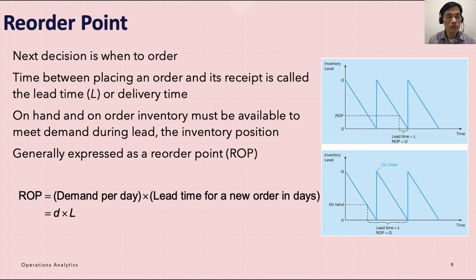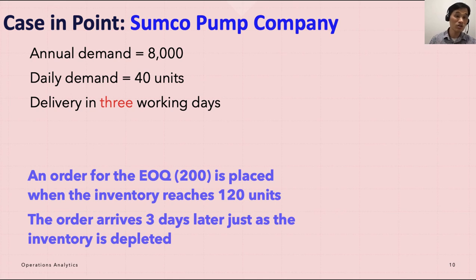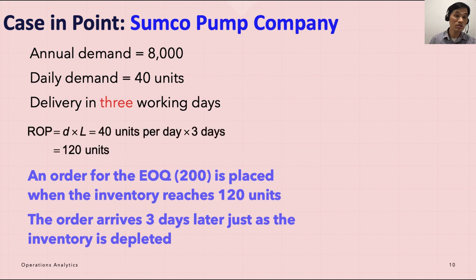The reorder point formula is: ROP equals demand per day times lead time for a new order in days, or d times L. For example, if annual demand is 8,000 units, daily demand is 40 units, and delivery takes 3 working days, the lead time is 3 days.